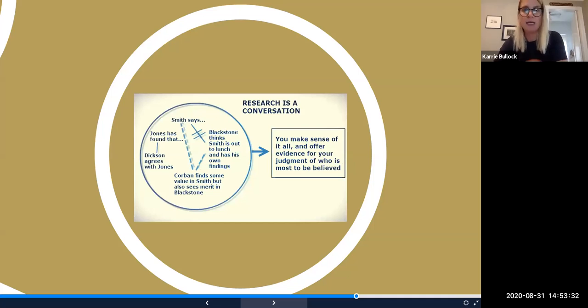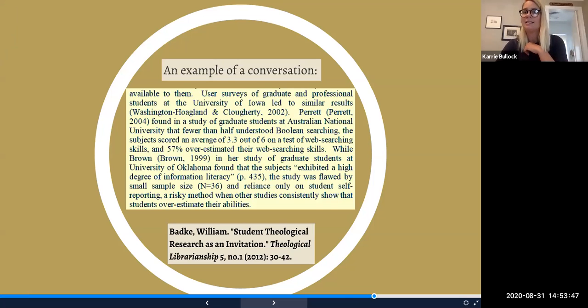So as you can see, Dickinson agrees with Jones. Jones has found that blah, blah, blah, but Smith says that Corbin finds some value, but Blackstone thinks it's all garbage. However, they feel what this does. When we write our papers, those guys, or women, sorry. They are cited here. They're the big players. They are the top of their field and a really strong example of research is when you are able to identify your experts in the field and highlight how they, what information they're presenting and how it works, how their model works for pushing your research forward.